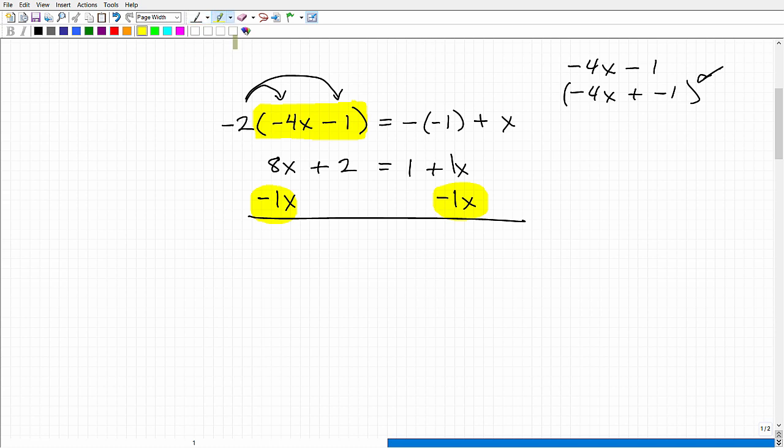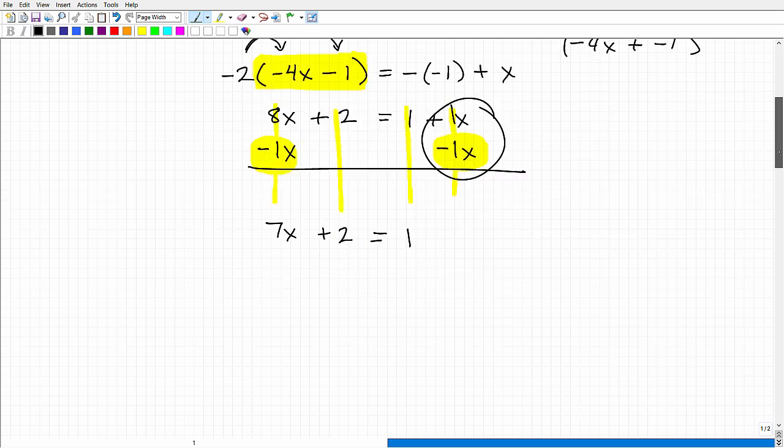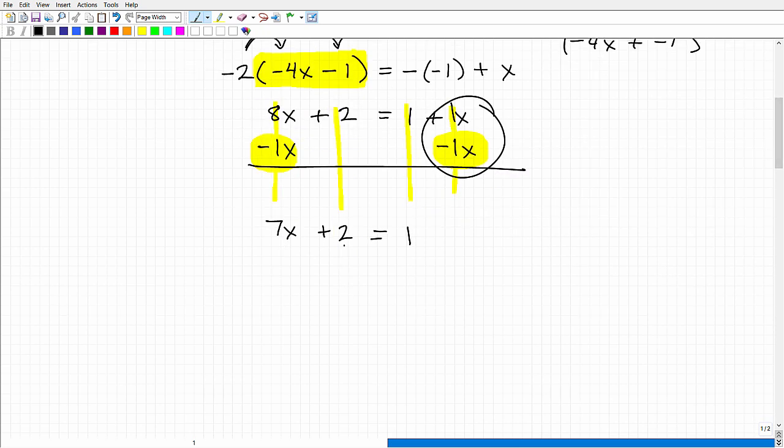Now let's go ahead and add down, and we have 8x plus a negative 1x. That will give me a positive 7x plus 2, because it's going to be 2 plus nothing or 0, equals, I just have a 1 right here, 1 plus 0, and then this goes away. That's what I wanted. So now I'm left with this basic equation, 7x plus 2 equals 1.